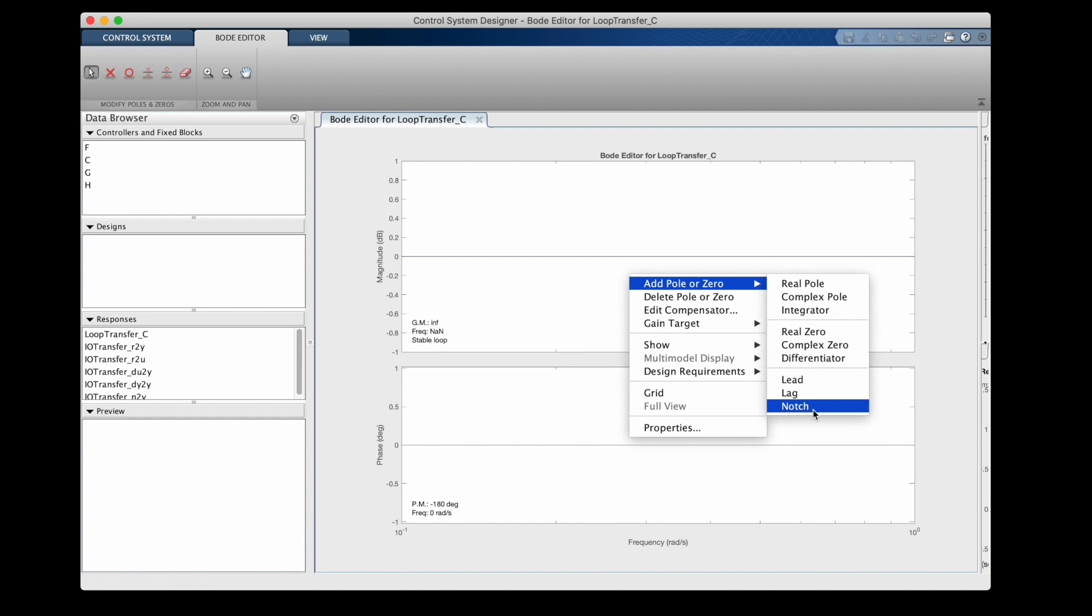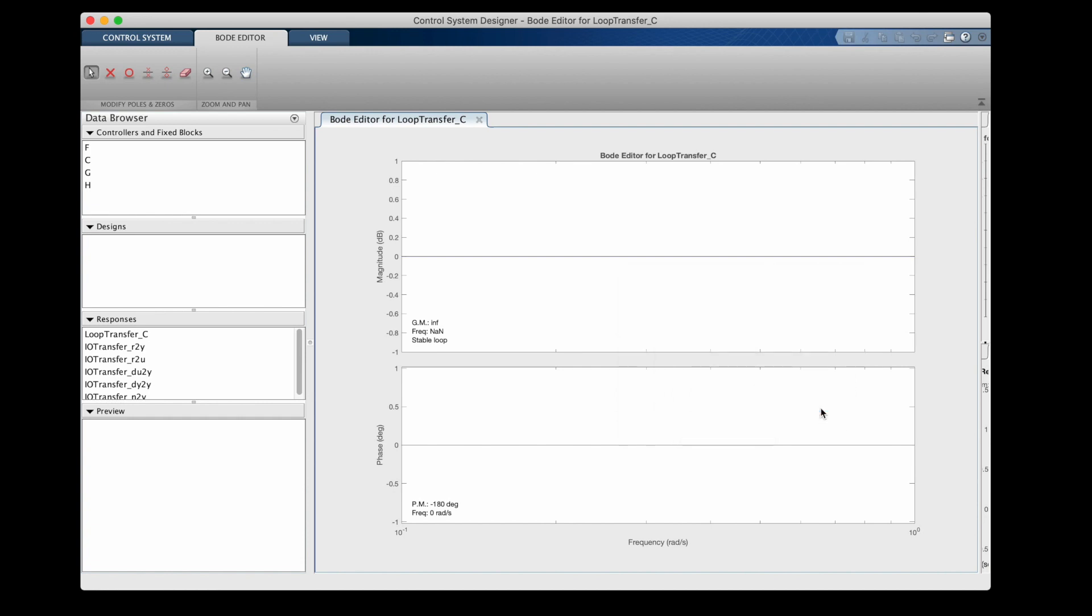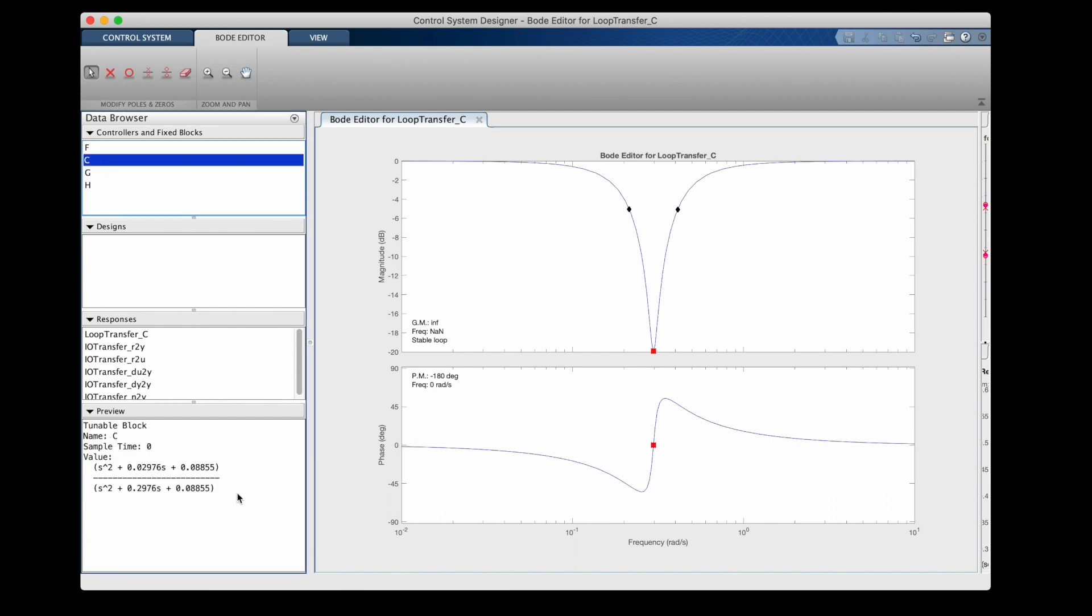Now if I right click in the editor window and select add pole or zero, I can choose a notch filter. And now I can just click where I want to place it.